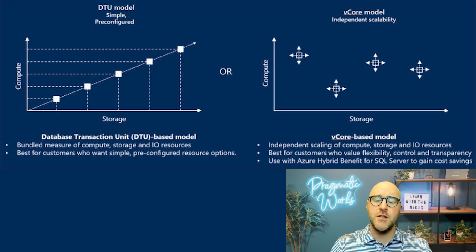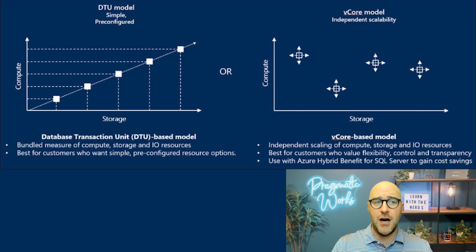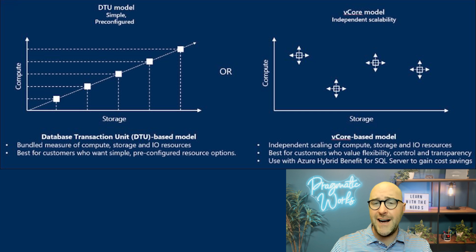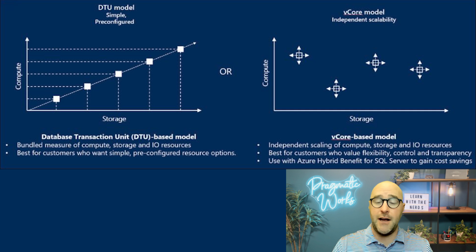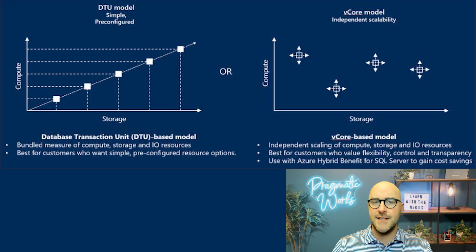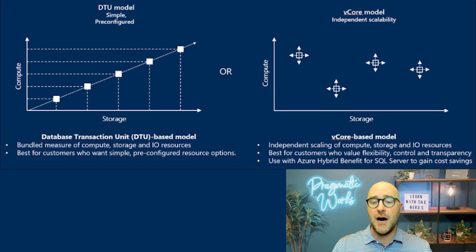So what are the key differences? A DTU is a bundled measure of resources, while a vCore is more granular — giving you more control over CPU and memory separately, whereas a DTU comes as a prepackaged object. With flexibility, vCore is much more flexible in resourcing your allocations, while DTU comes with only fixed tiers without the ability to scale specific components independently. DTU is simpler to manage and understand for users without extensive database performance experience, but vCore offers more flexibility including the option to go with a serverless compute option.